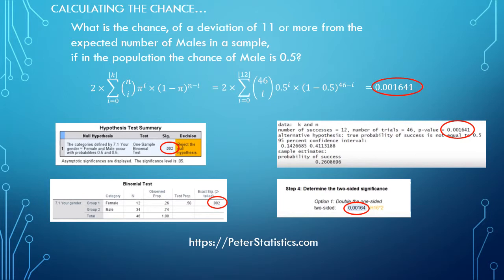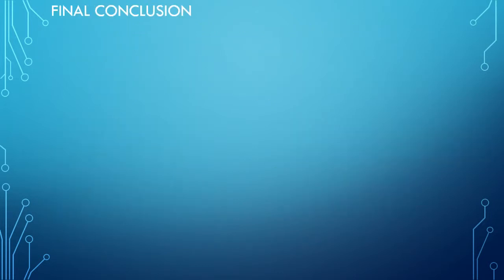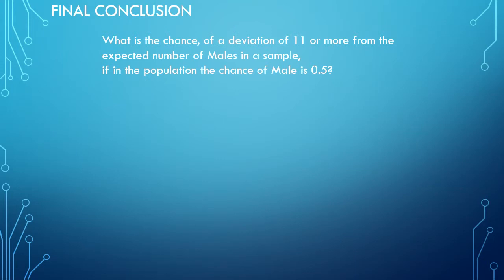So we can reach our final conclusion. This was the question we had; the answer was 0.002 rounded. And well, we already discussed that if this chance is very low, and 0.002 is considered usually very low—most often the threshold is at 0.05, so anything less than 0.05 would often be considered low.